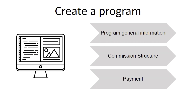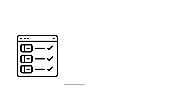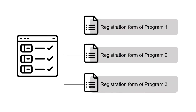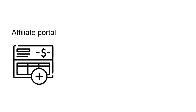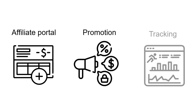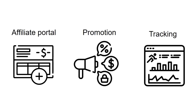Firstly, to work with affiliates, you must create an affiliate offer or program. For each program, there is an auto-generated affiliate registration form on which affiliates need to sign up. Once the affiliates are on board, they will have their own portal to get resources to promote your store, and UpPromote will track the conversion brought by the affiliates.